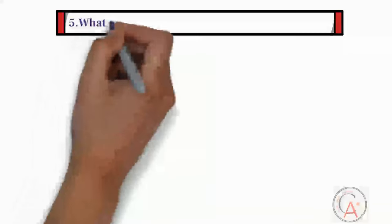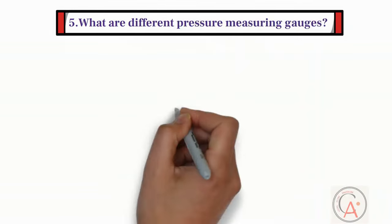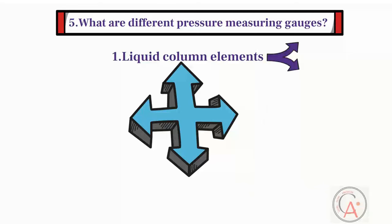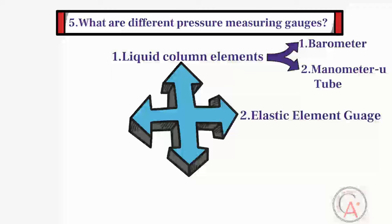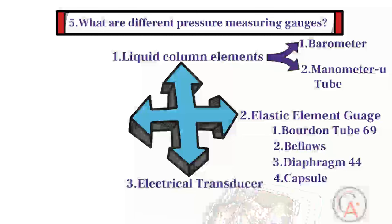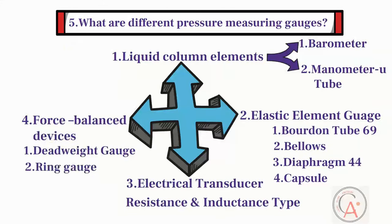The fifth question is: what are different pressure measuring gauges? There are four main types. The first type is liquid column elements such as barometer and manometer U-tube. The second type is the elastic element gauge, such as Bourdon tube, bellows, diaphragm, and capsule. The third type is electrical transducers such as resistance and inductance type. The fourth type is force balance devices such as deadweight gauge, ring gauge, and bell gauge.